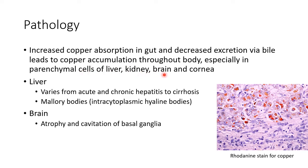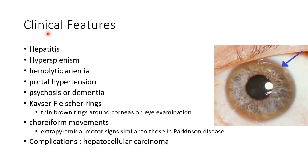Copper also accumulates in kidney, brain, and cornea. The features seen in the liver vary from acute and chronic hepatitis to cirrhosis, which can be macronodular or micronodular. This picture shows a liver biopsy stained by rhodanine stain, demonstrating copper. There can also be Mallory bodies, which are intracytoplasmic hyaline bodies. The brain shows atrophy and cavitation of the basal ganglia.